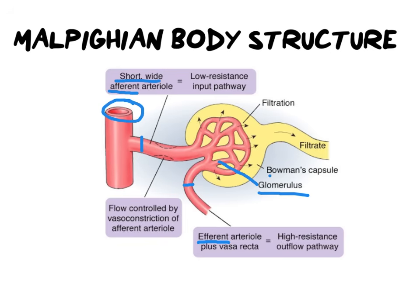That brings me to Bowman's capsule — the capsule that sits around the glomerulus, where our filtrate is going to collect. The blood comes in via the afferent arteriole, gets squeezed from a large area down into a smaller area, and this forces particles that need to be removed out of the blood and into Bowman's capsule, which does the final filtering. Now, what does the Malpighian body have that assists filtration? We're going to look at a closer picture of the glomerulus and Bowman's capsule to see how products actually move through the wall of the glomerulus and into Bowman's capsule.